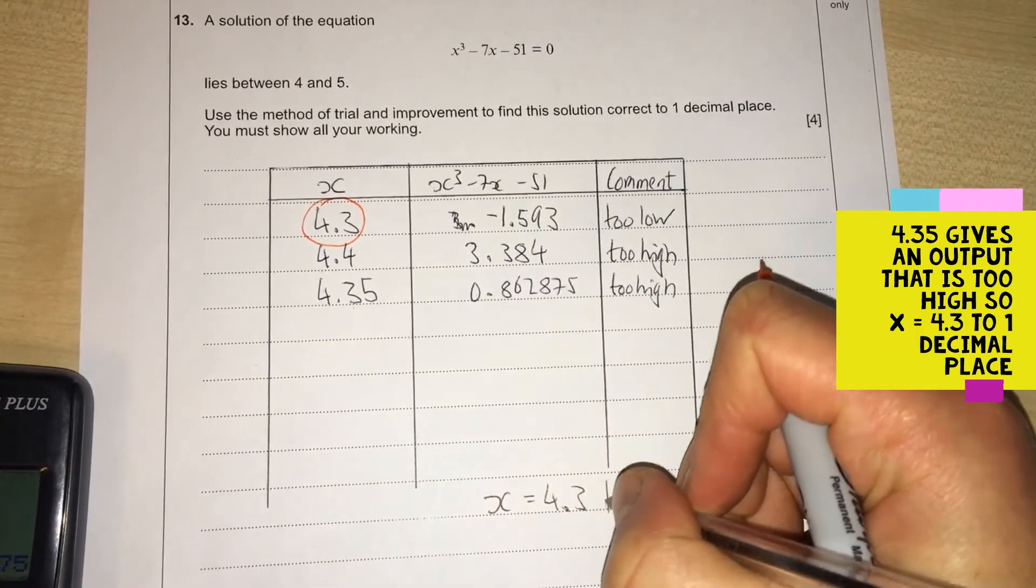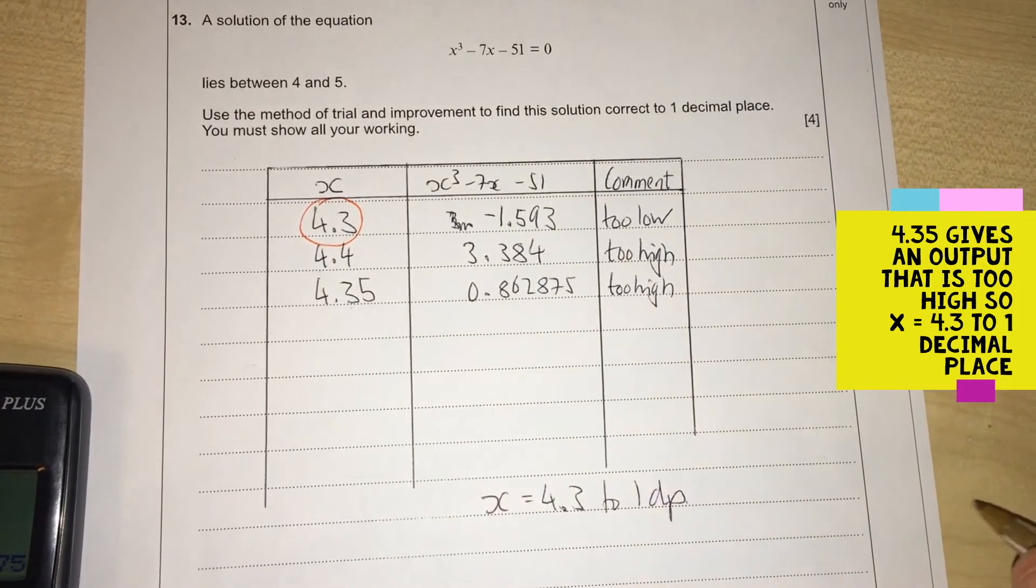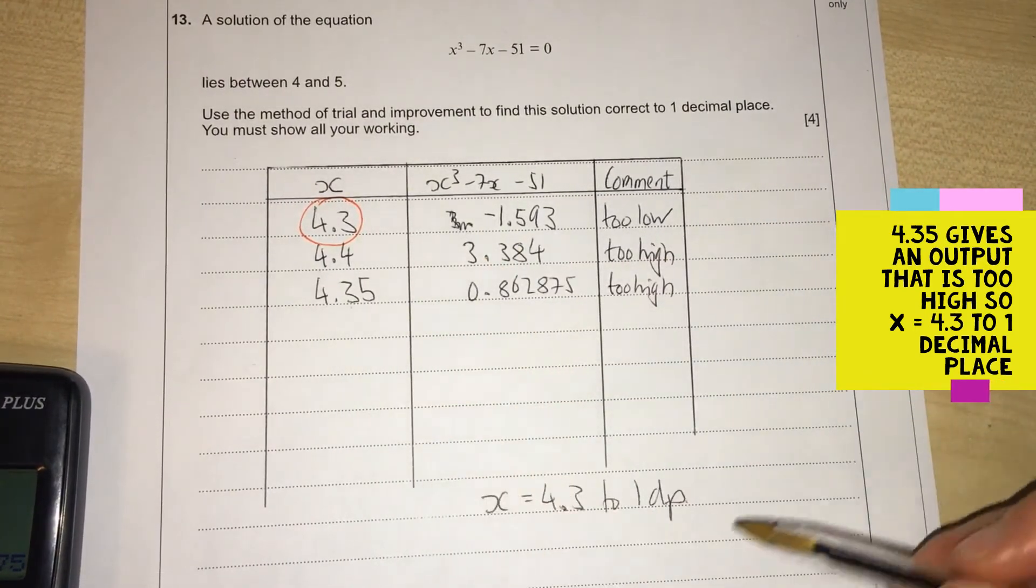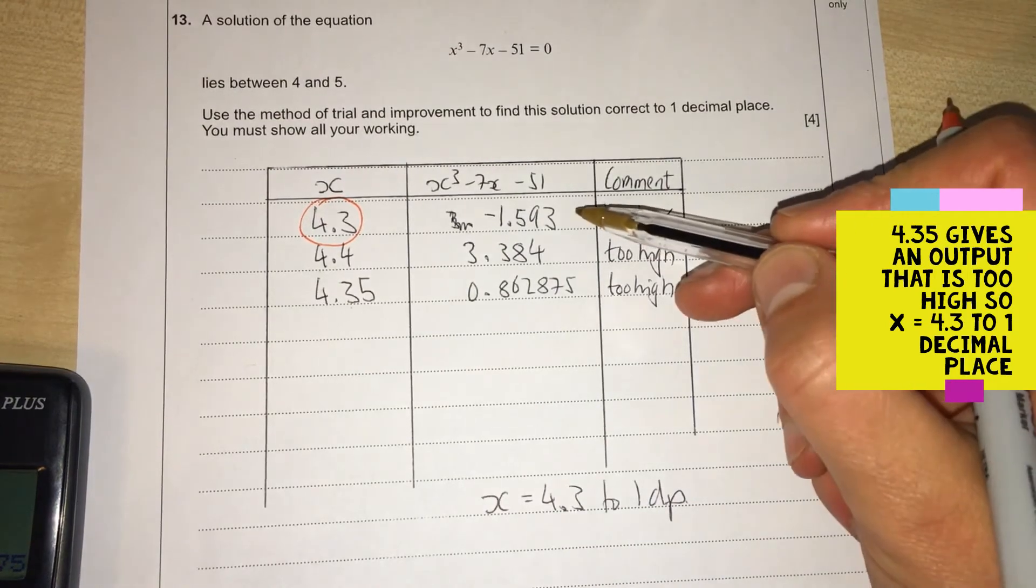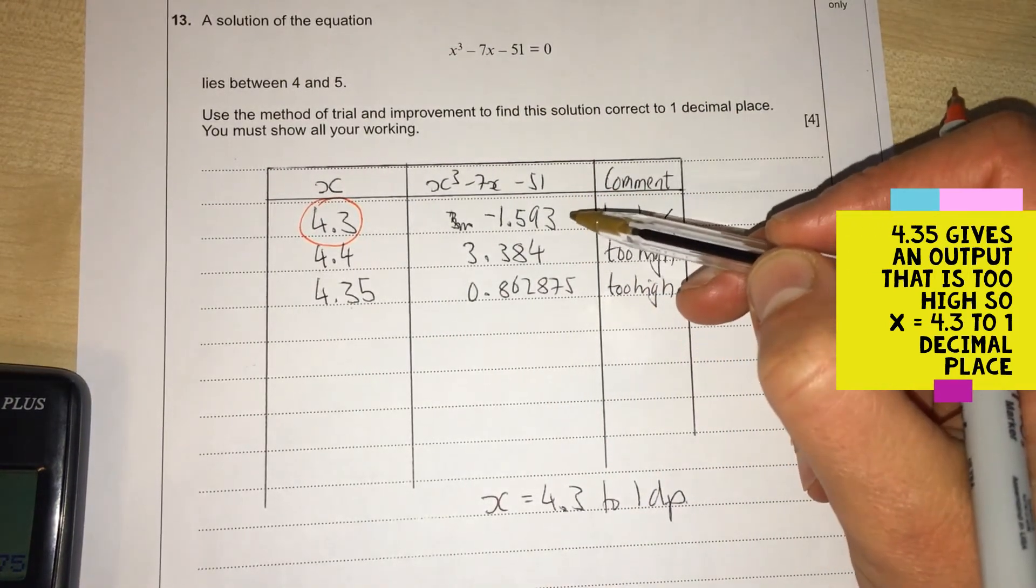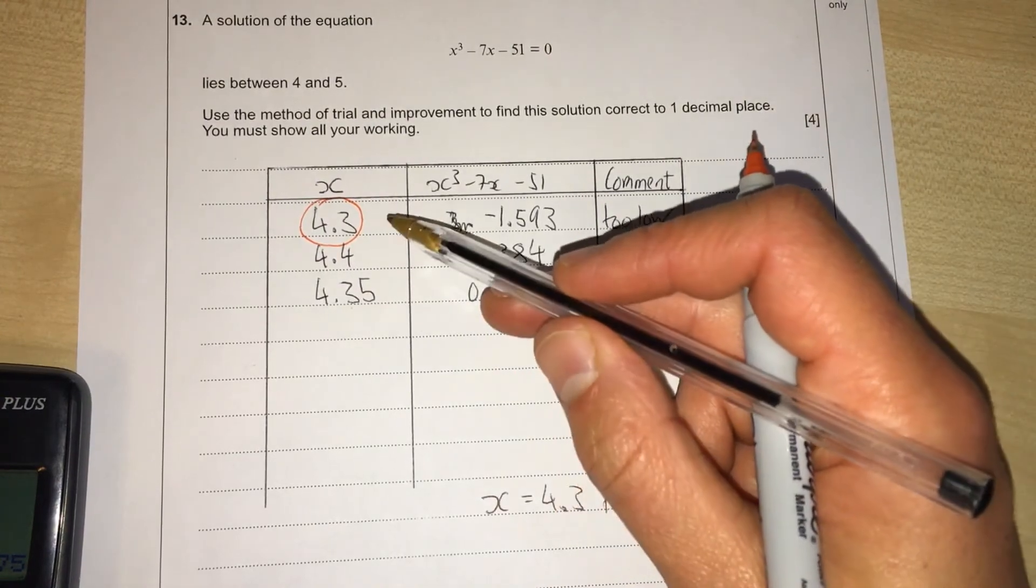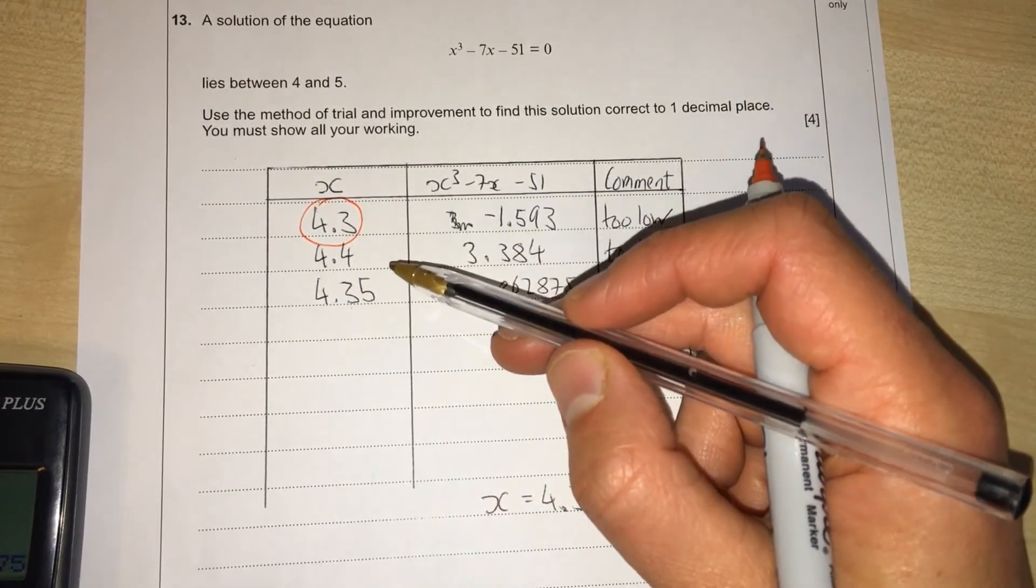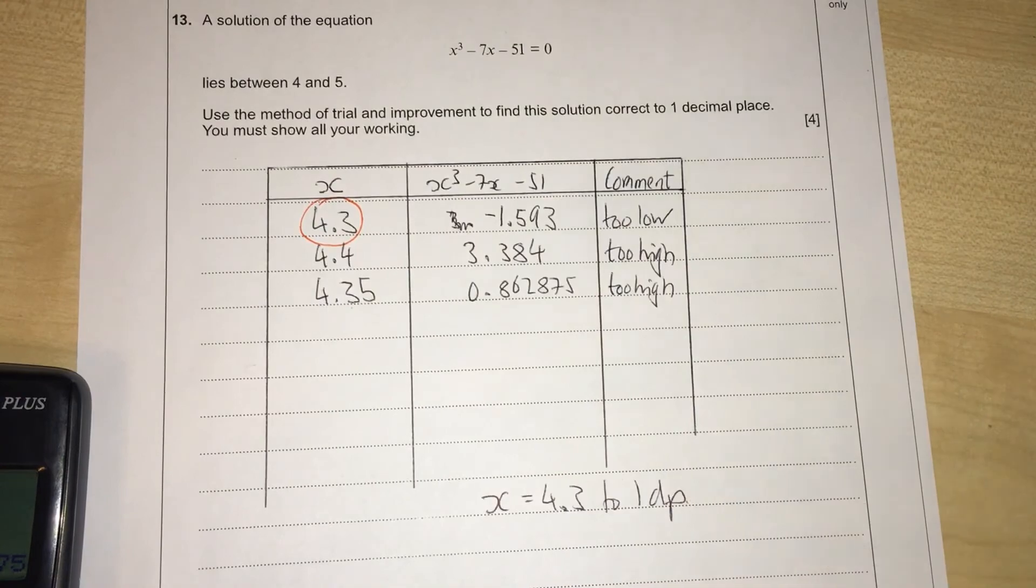Then I'm going to write my answer clearly here: X = 4.3 to one decimal place. I'll get four marks for this. I've used the function correctly to get my answers, I've gone halfway between the two that were highlighted to me, and I've selected the correct one.